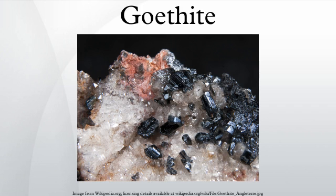Goethite, named after the German polymath and poet Johann Wolfgang von Goethe, is an iron-bearing hydroxide mineral of the diaspore group, found in soil and other low-temperature environments.